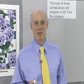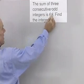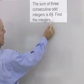So let's go to the board and take a look at how we work this problem. We have the sum of three consecutive odd integers is 69, find the integers.